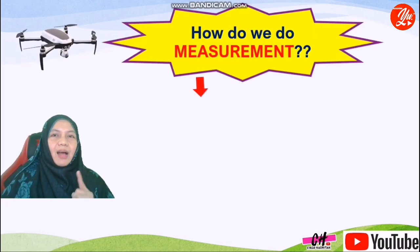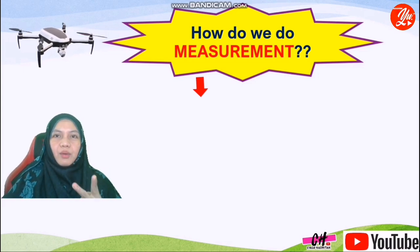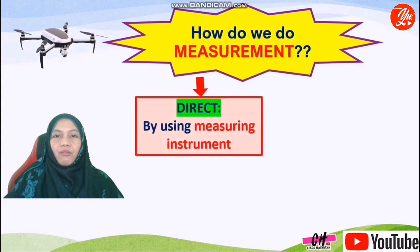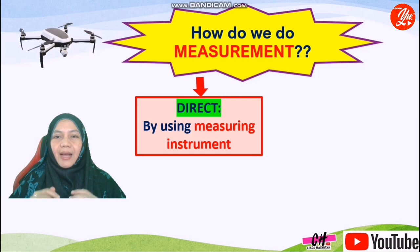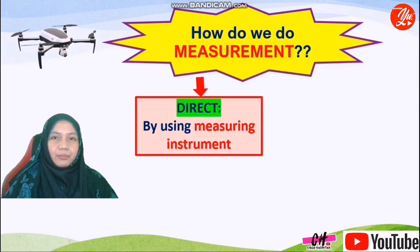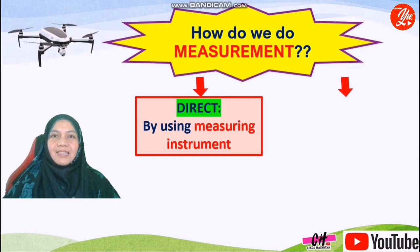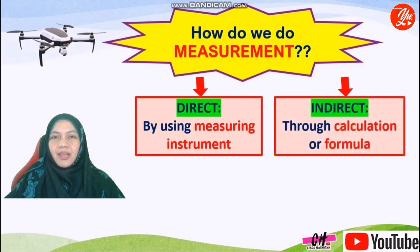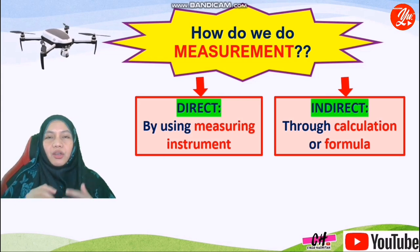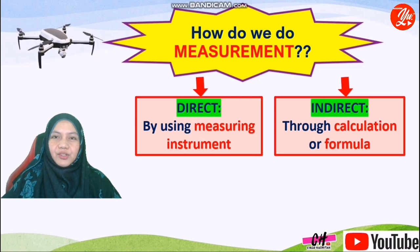So how do we do measurement? There are two ways. The first is called direct measurement, which is done using a measuring instrument. The second type is called indirect measurement, which is determined through calculation using a formula or mathematical operations.